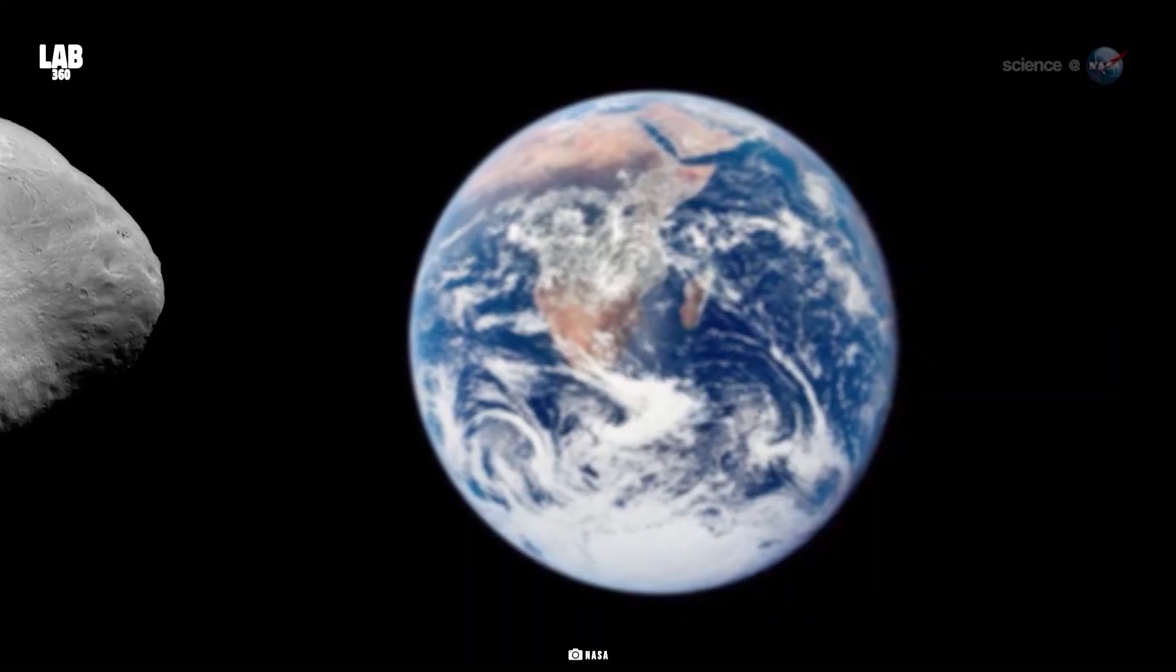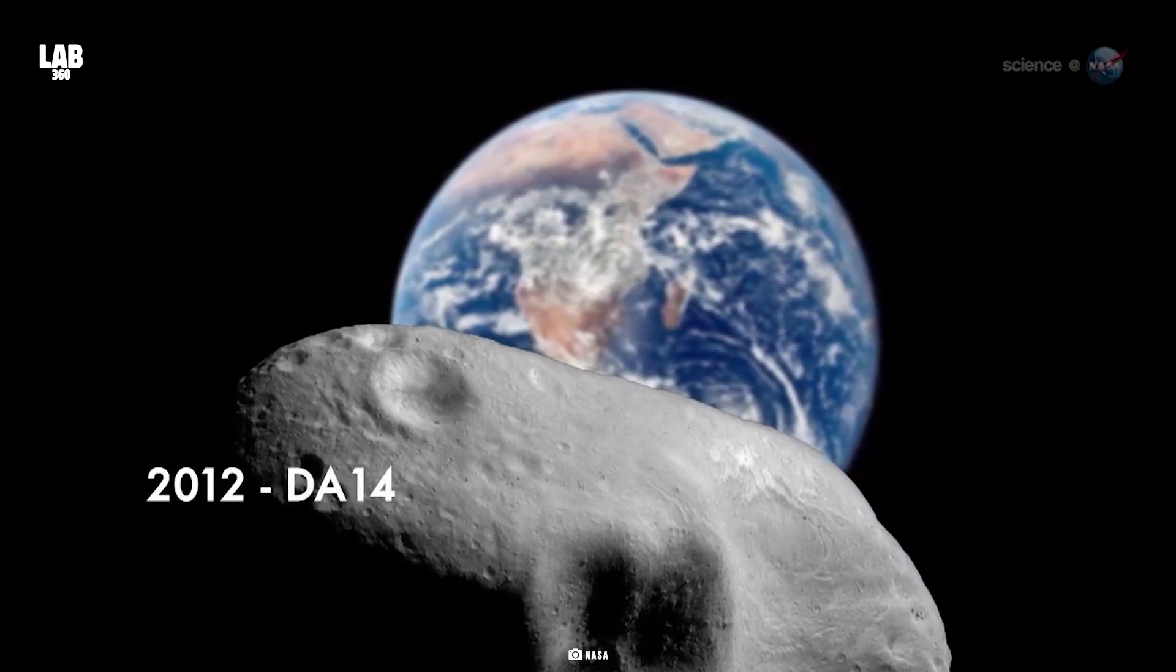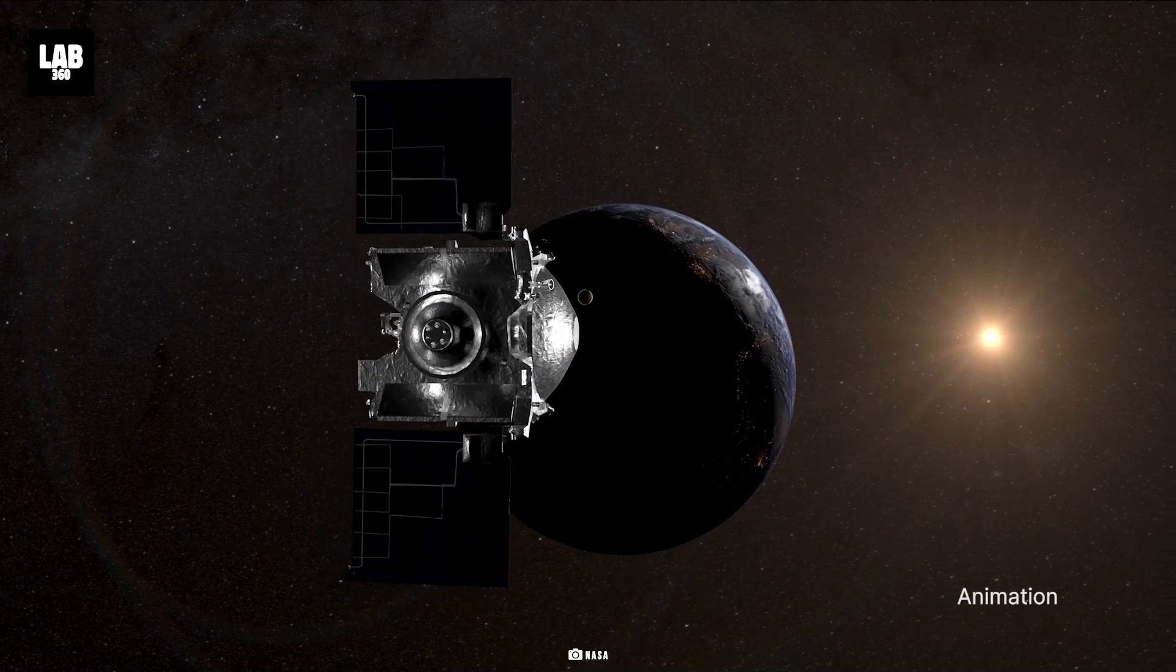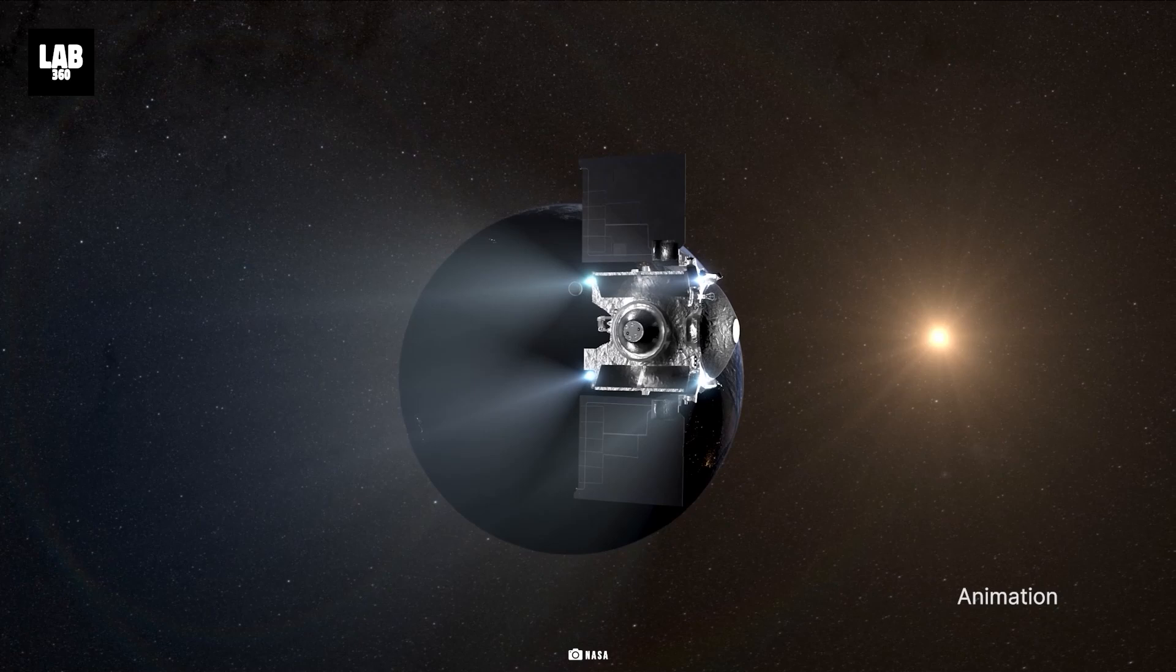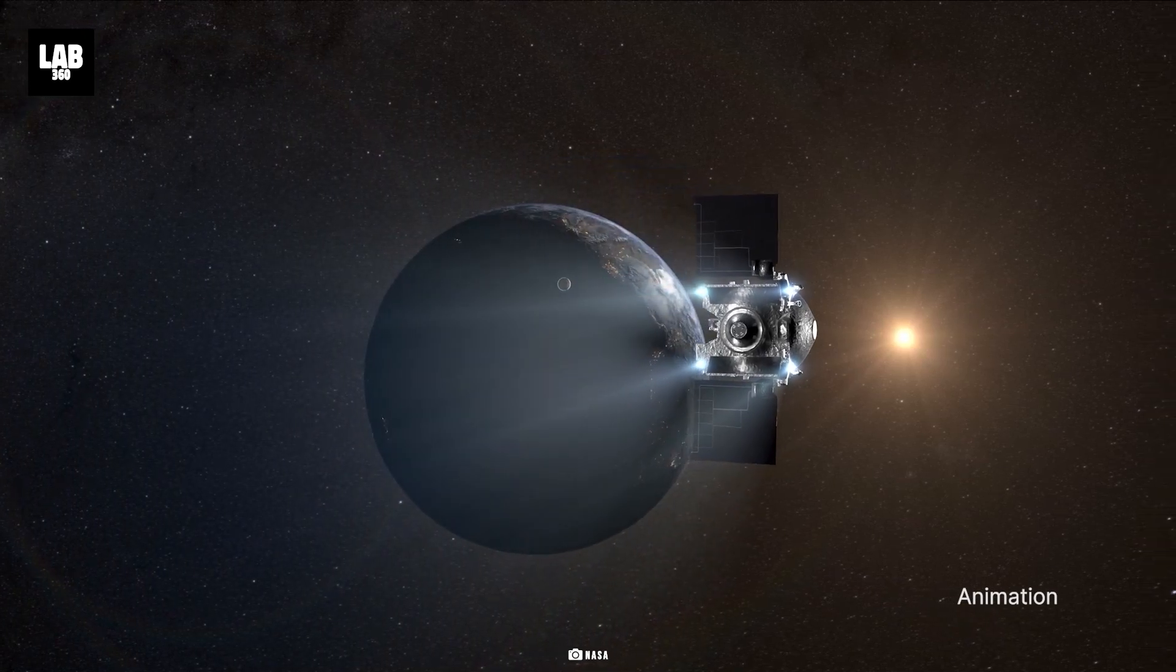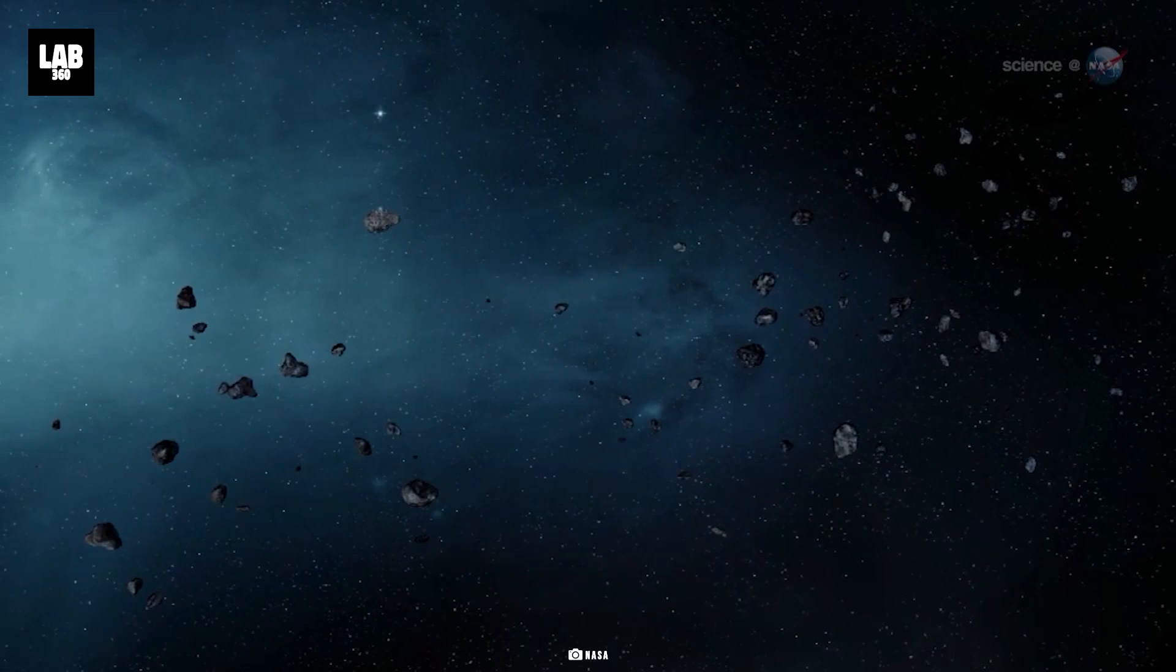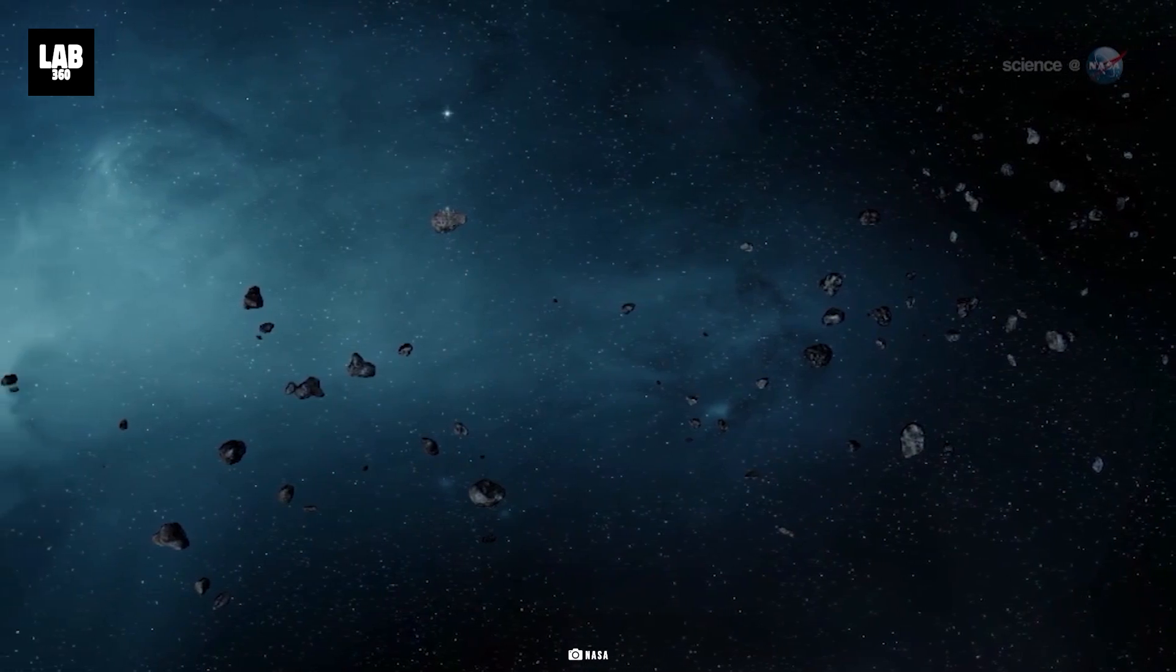However, scientists pointed out that during Apophis' 2029 flyby with Earth, it would pass through a gravitational keyhole of no more than about 500 miles in diameter. This will further set up a future impact exactly seven years later in April 2036.